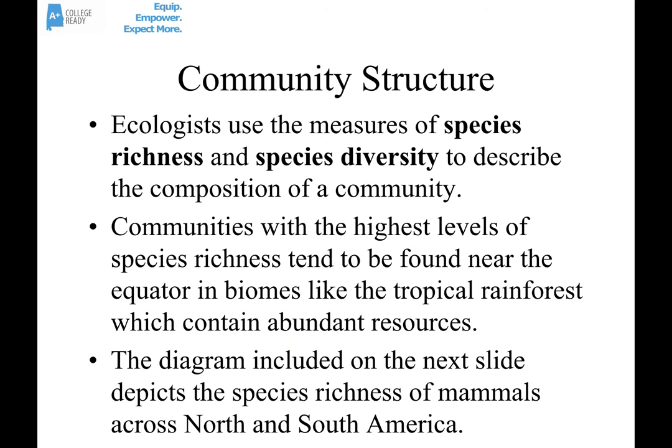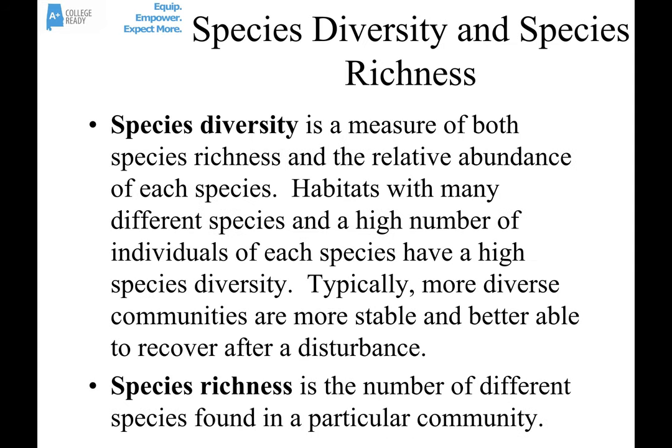Now let's talk about community structure. Ecologists often talk about species richness and species diversity. Species richness is a measure of the number of different species found in a community — how many different kinds of things live in a place. Species diversity is a measure of both species richness and the relative abundance of each species — so it's the richness plus how common each one of those species is.